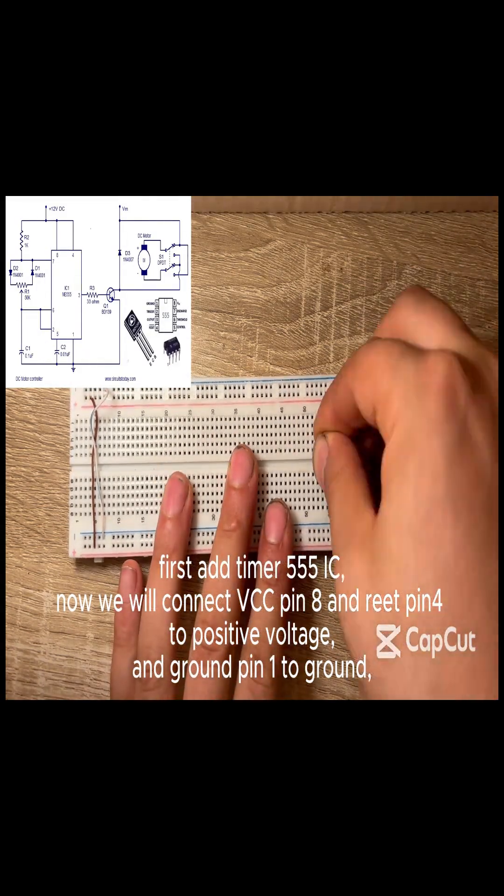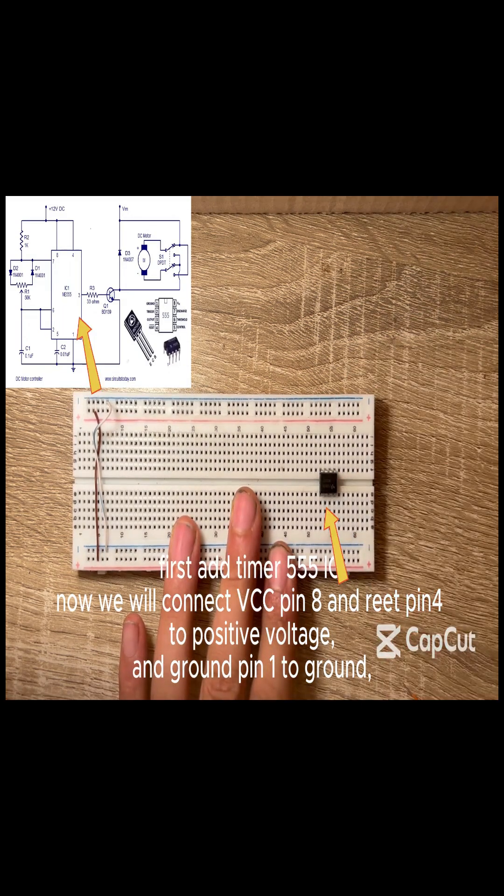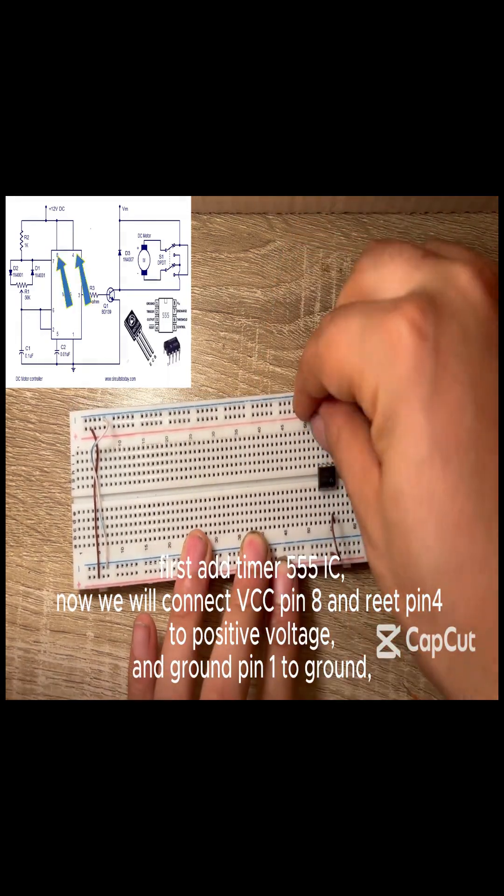First, add the timer 555 IC. Now we will connect VCC pin 8 and reset pin 4 to positive voltage, and ground pin 1 to ground.